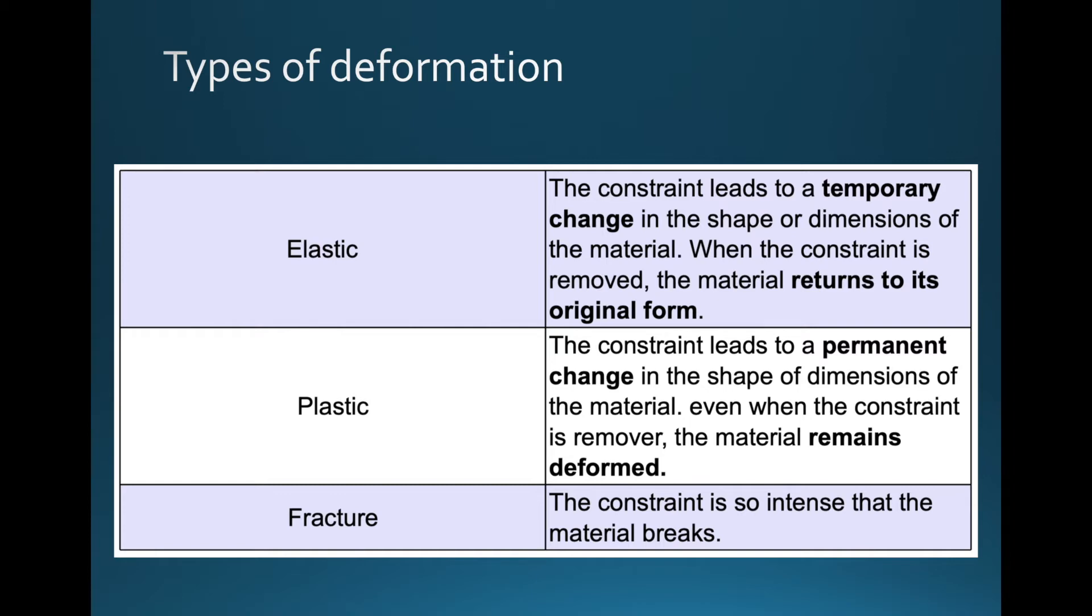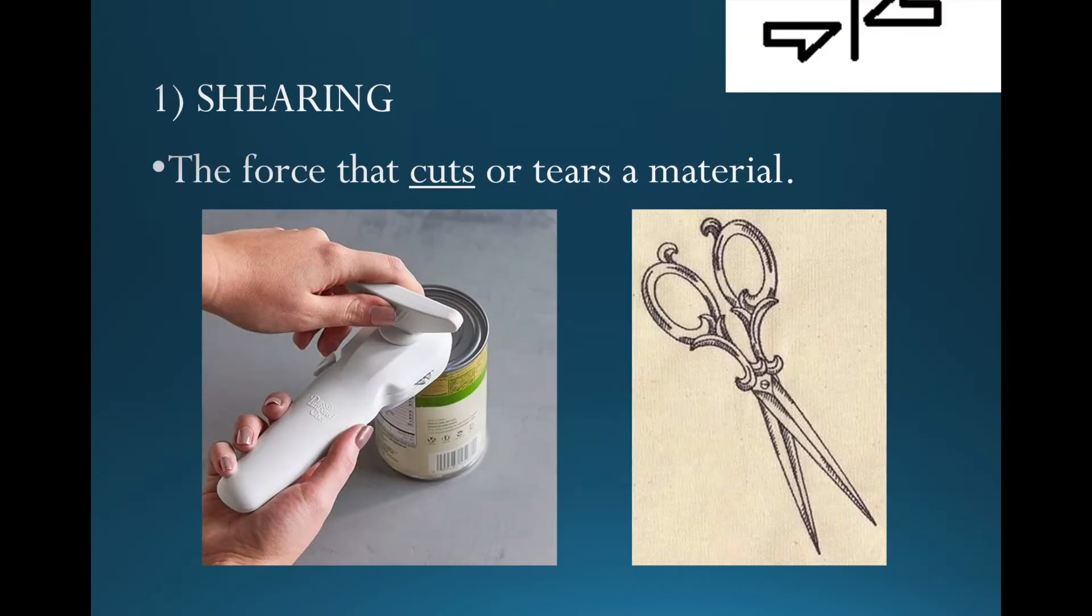Now what are those types of constraints? When we apply a force, it has a certain effect. There's five different ones. The first one is shearing - a force that will cut or tear through a material. You can use a pair of scissors to do this, a saw, or a can opener.